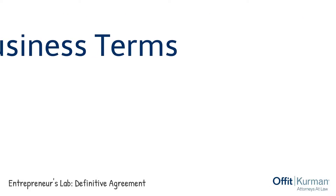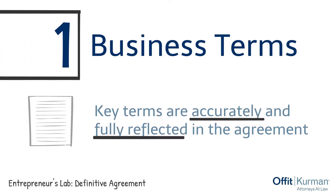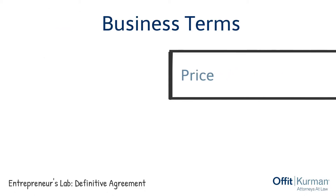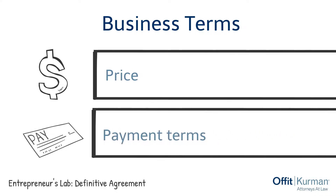1. The business terms. A seller needs to make certain the key terms in the LOI are accurately and fully reflected in the agreement. Typically, the first portion of a definitive agreement speaks to the price, the payment terms, and the related items.